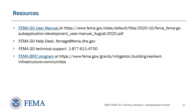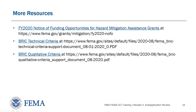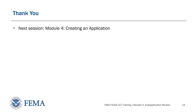Here are some resources that will be helpful if you want a refresher on what we've covered today. There's a link to the FEMA GO user manual, which you can also find by going to fema.gov/bric and looking for the FEMA GO support materials. FEMA GO has a help desk at femago@fema.dhs.gov and a toll-free number for technical support. For more information about the BRIC or FMA programs, go to fema.gov/bric or fema.gov/fma, where you'll also find program support materials such as technical criteria, qualitative criteria, and links to the Notice of Funding Opportunity and its fact sheet. Thank you for joining me for Module 3, and I hope you can join us for Module 4, Creating an Application.